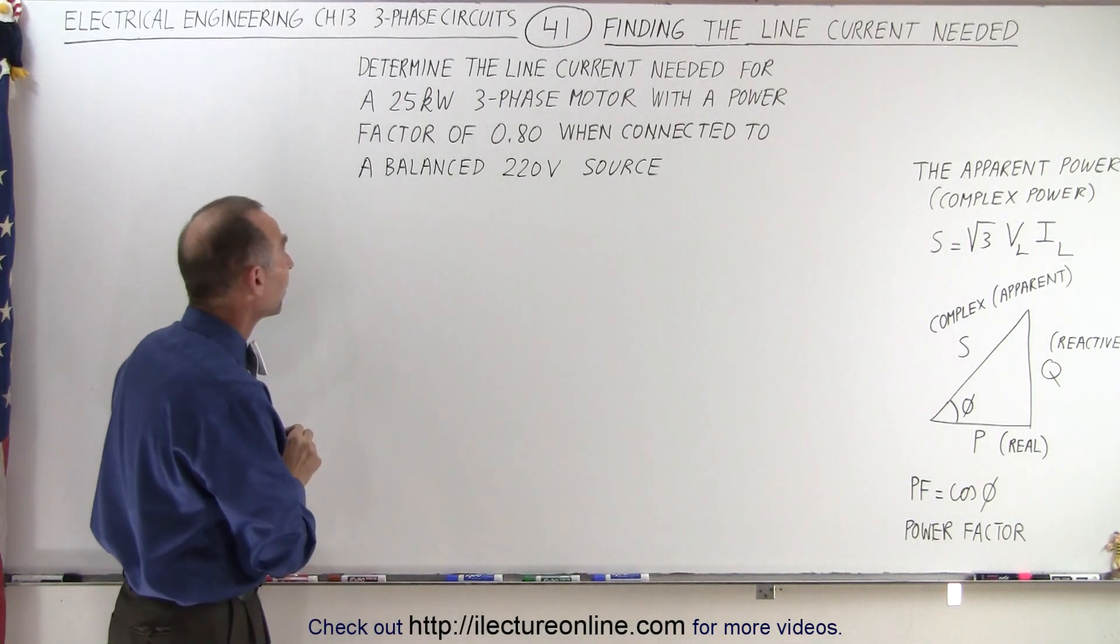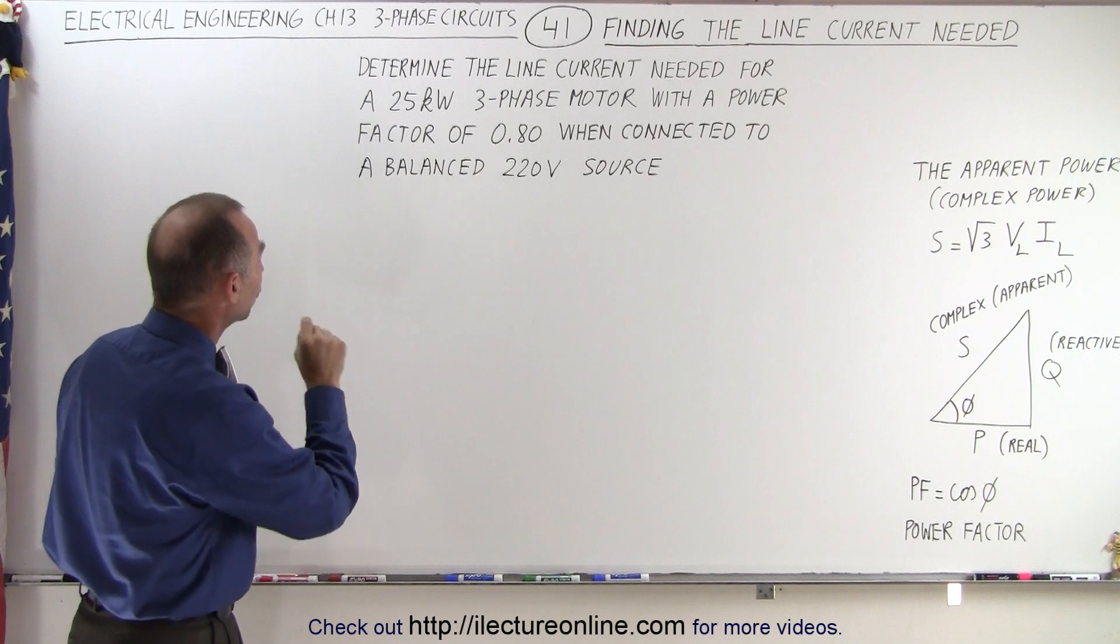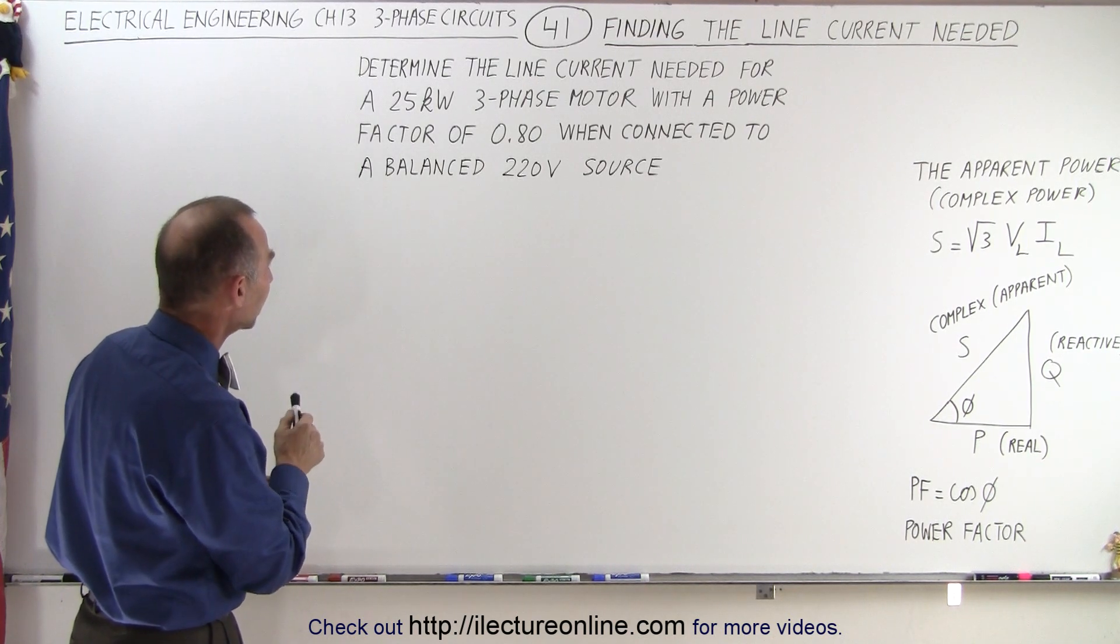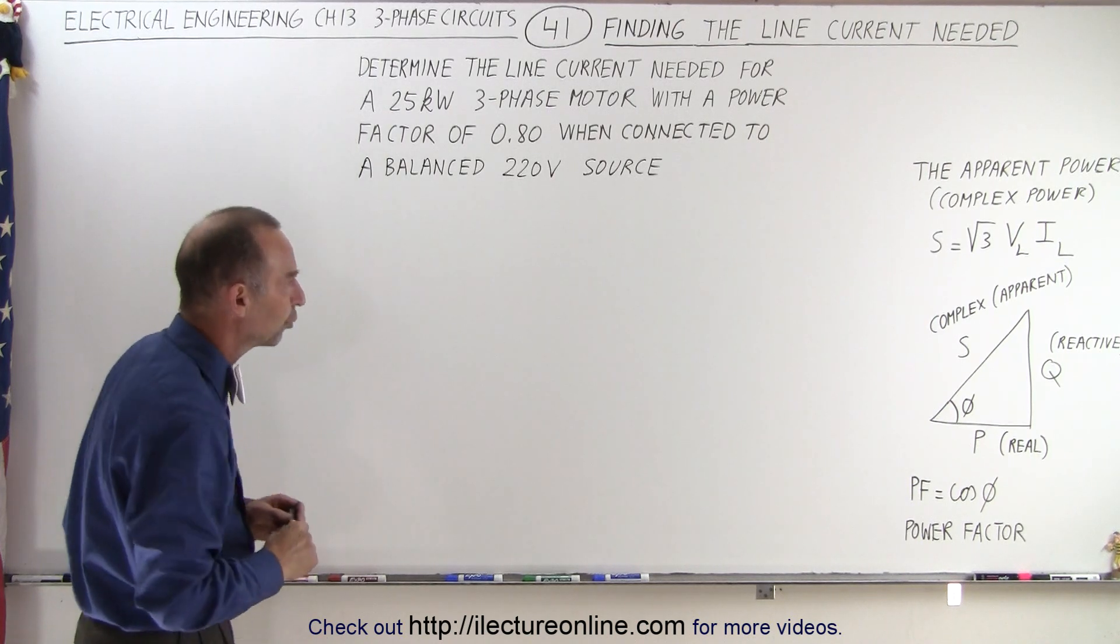In this particular problem, we're supposed to determine the line current needed for a 25 kilowatt three-phase motor with a power factor of 0.8 when connected to a balanced 220 volt source.